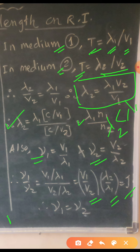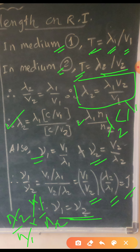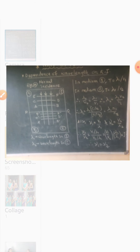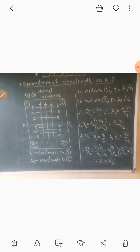The reason is V1 upon V2 equals N2 upon N1, and lambda 2 upon lambda 1 equals N1 upon N2. So N1 and N2 cancel, giving the answer as 1. Hence the relation is nu 1 is equal to nu 2. Conclusion: frequency does not change during refraction — it remains the same. But wavelength and velocity both change. When the path is from rarer to denser, frequency does not change, but wavelength and velocity decrease. This is the dependence of wavelength on the refractive index of the medium.